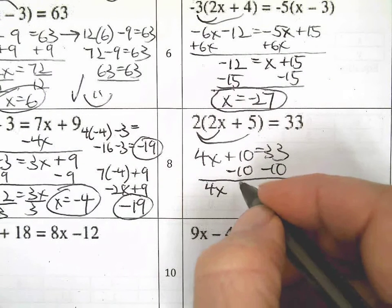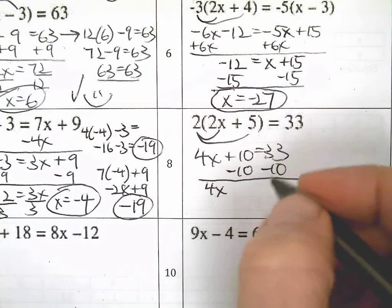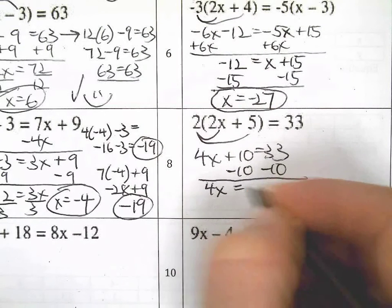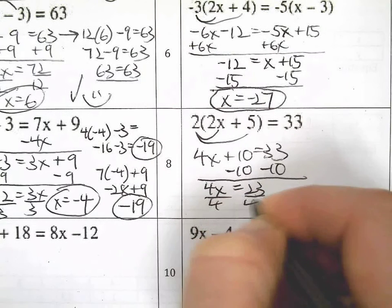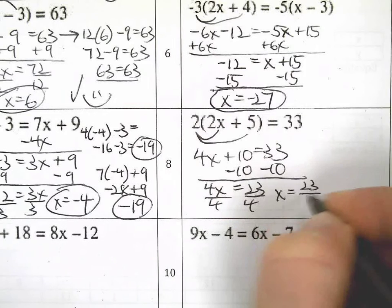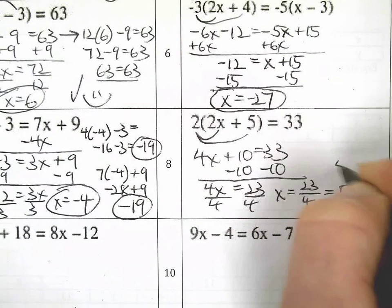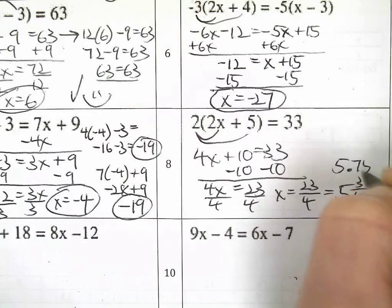On your test, go slowly, please. Take your time and make sure you're doing it correctly. Divide both sides by 4. Whoa, x equals 23 fourths, which is the same as 5 and 3 fourths or 5.75.